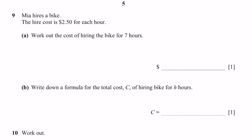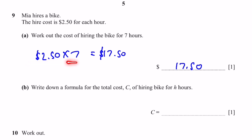Question 9. Mia hires a bike at $2.50 per hour. Part A: the cost for 7 hours is $2.50 multiplied by 7, which gives $17.50. Part B: write a formula for the total cost C of having the bike for H hours. Because we multiply 2.50 by the number of hours, the formula is C equals 2.50H.